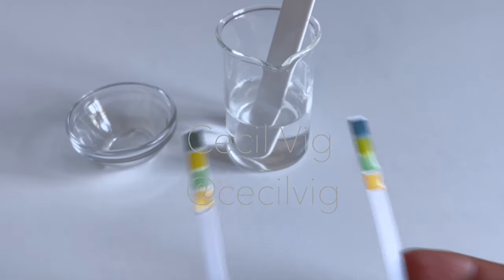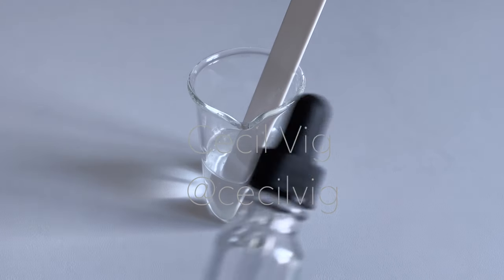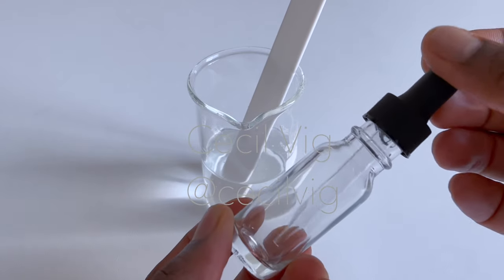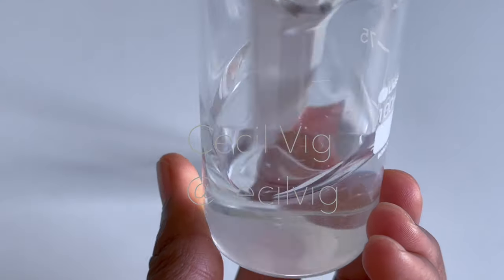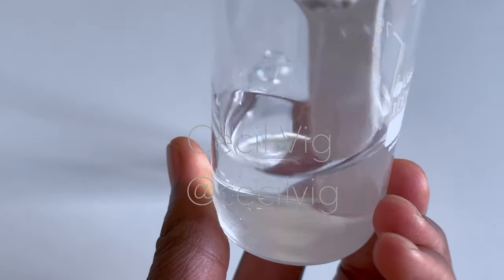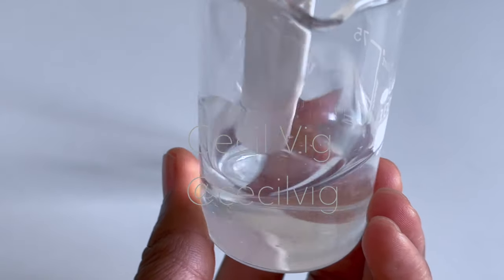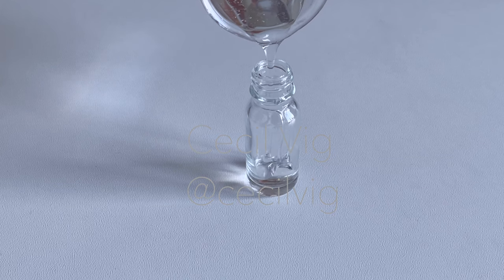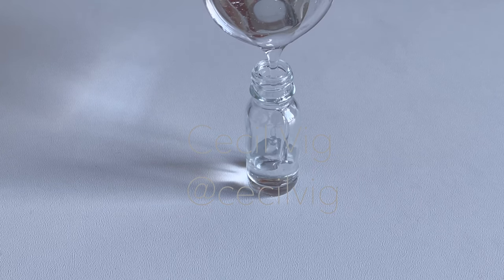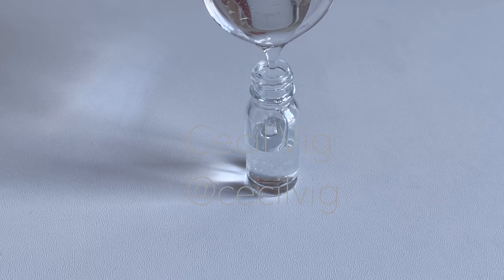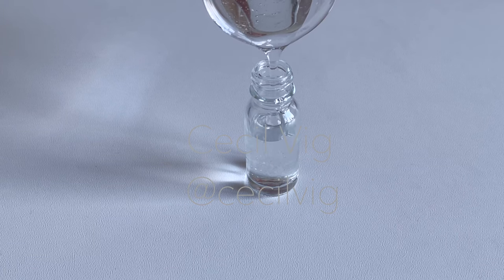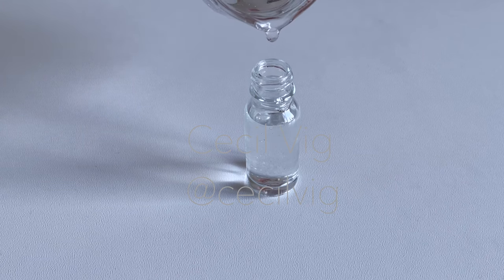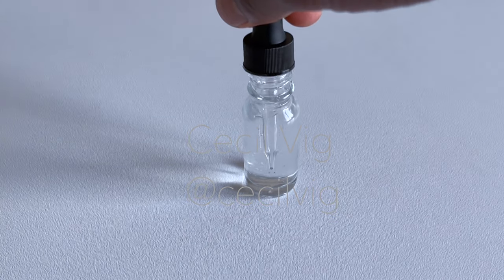After I adjust the pH value, I pour the moisturizing anti-aging serum into a clean, sterilized serum container and seal it airtight. This serum should be stored at room temperature away from direct sunlight. To determine the shelf life of a product, a stability test is required. However, a DIY method to determine the shelf life of a product is to check the shelf life of all the ingredients used in the formulation, and the ingredients with the least shelf life determines the shelf life of the product.